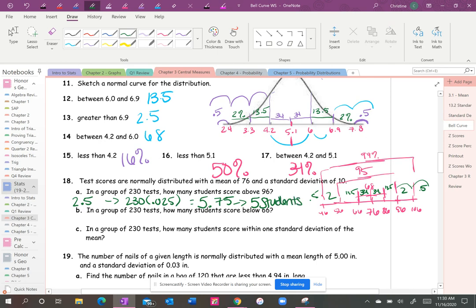The next one: in a group of 230 students, how many students score below a 66. So here is 66, and you want all the percentages below 66. So 13.5, 0.5, that's 14 plus 2 is 16. So then you're just doing 16 percent of 230, which is 36.8. You cannot have 0.8 of a person, so you would say 36 students.